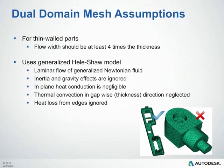The main thing to take away is that we're neglecting heat transfer on the edge of the part. When analyzing thin-walled parts, that is negligible. However, when you get into thicker-walled parts, you are ignoring heat loss through a significant amount of surface area, which can impact how we predict the part cools. For thin-walled parts it's negligible, but for thick-walled parts it's not a good idea to run the dual domain mesh type.